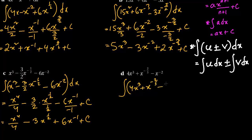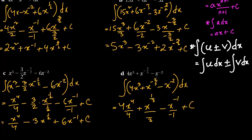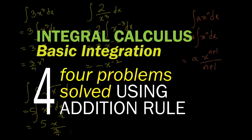The next one is the integration of 4x cubed plus x to the power minus 2 by 3 minus x to the power minus 2, dx. The 4 is the constant; x cubed becomes x to the power 4 by 4. For x to the power minus 2 by 3: the power increases by 1 to give 1 by 3, divided by 1 by 3, which gives 3x to the power 1 by 3. Then minus minus cancels to give plus x to the power minus 1.